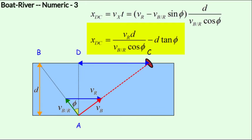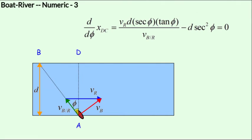We need the angle phi for which the drift is minimum. So how would we do that? We differentiate this function. For the minimum drift, we differentiate the function x dc with respect to phi. In order to obtain phi for which the drift is the minimum, we set the differentiation result to zero. You can see that d would cancel off and so would one of the sec phi's. Let's simplify this further.